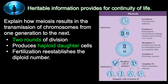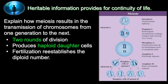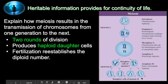This is the essential knowledge piece: heredity provides for continuity of life, and you need to explain how meiosis results in the transmission of chromosomes from one generation to the next. By moving chromosomes through a series of phases — two rounds of phases — the chromosomes are paired up, sorted, and segregated into four haploid cells.